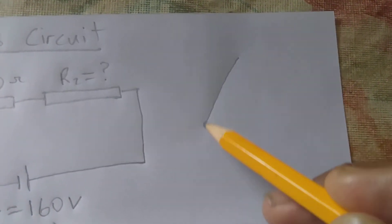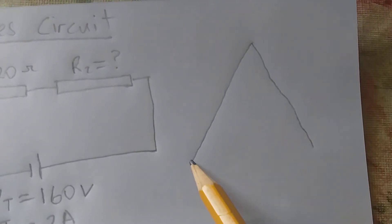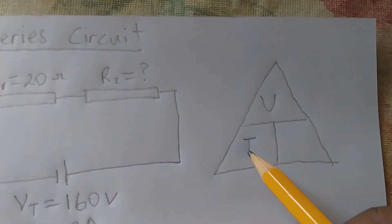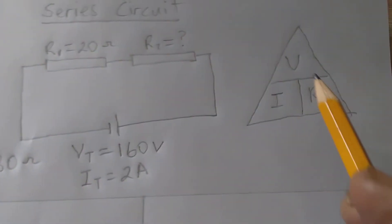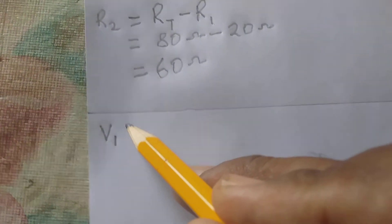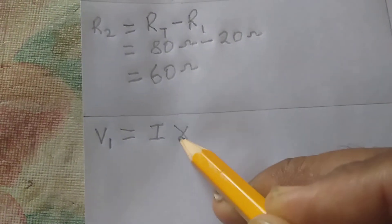Moving on to V1 — the voltage across resistor one. We need a formula to find that, and we're going to use the triangular formula. Remember from previous videos, we had a triangle with V at the top, and I and R at the bottom. V is for voltage, I is for current, and R is for resistance. If you cover V, you're left with I times R, so V equals I times R.